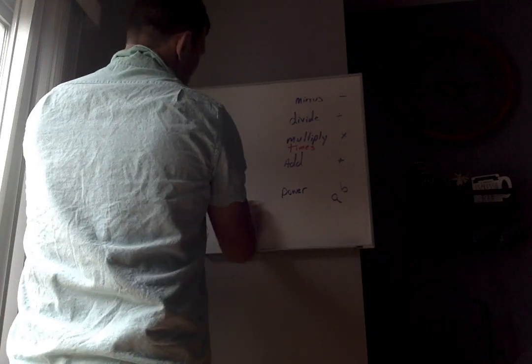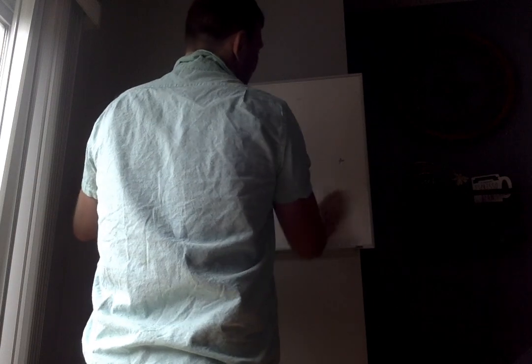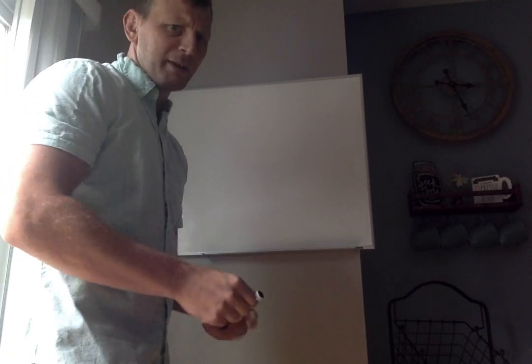So this is a tutorial on how to do IXL Algebra 1 I3, which is basically simplifying expressions that involve like terms and the distributive property.